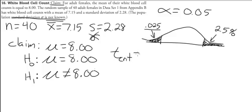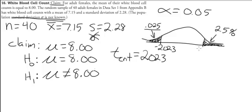With n = 40, our degrees of freedom are 39. Looking that up in the table gives a t-critical of 2.023. So our critical values are negative 2.023 and positive 2.023.